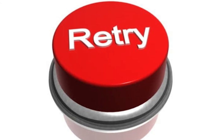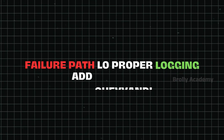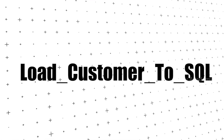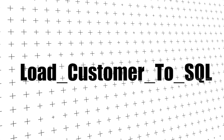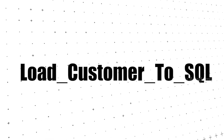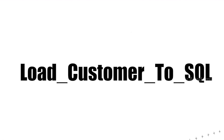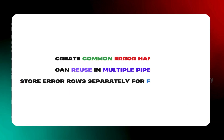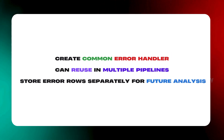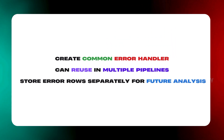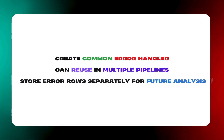Best Practices: Use Retry Policy logically. In the failure path, ensure proper logging. Activity names should be clear, for example 'Load_Customer_To_SQL'. Create common error handling across multiple pipelines for further analysis and keep errors separate. This is how you take your error handling to the next level.